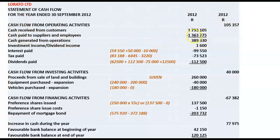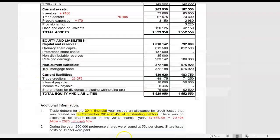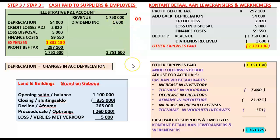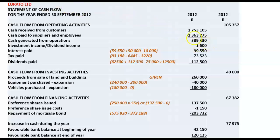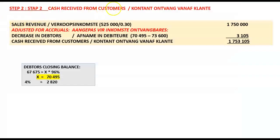Cash generated from operations is then the difference between the two: 389,330. We are not required to do the reconciliation note, but if we had to, what is the difference in the reconciliation note compared to our calculation of cash paid to suppliers and employees? We'd also start with profit before tax, adjust for all non-cash items — depreciation, credit losses allowance, loss on disposal of assets — and adjust for separately disclosable items, finance costs and dividends received. We would not have taken out revenue, because we're working with the third line and revenue is included in the first line. We would have added the movement in working capital including the decrease in debtors of 3,105. The only difference is that we would not have taken out revenue and we would have added the movement in debtors.